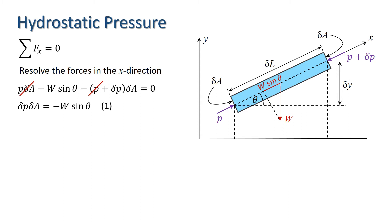Now, the weight W is going to be the fluid density times acceleration due to gravity times the volume of the cylinder. And the volume of the cylinder is simply delta L times delta A, thus W equals rho G delta L times delta A.